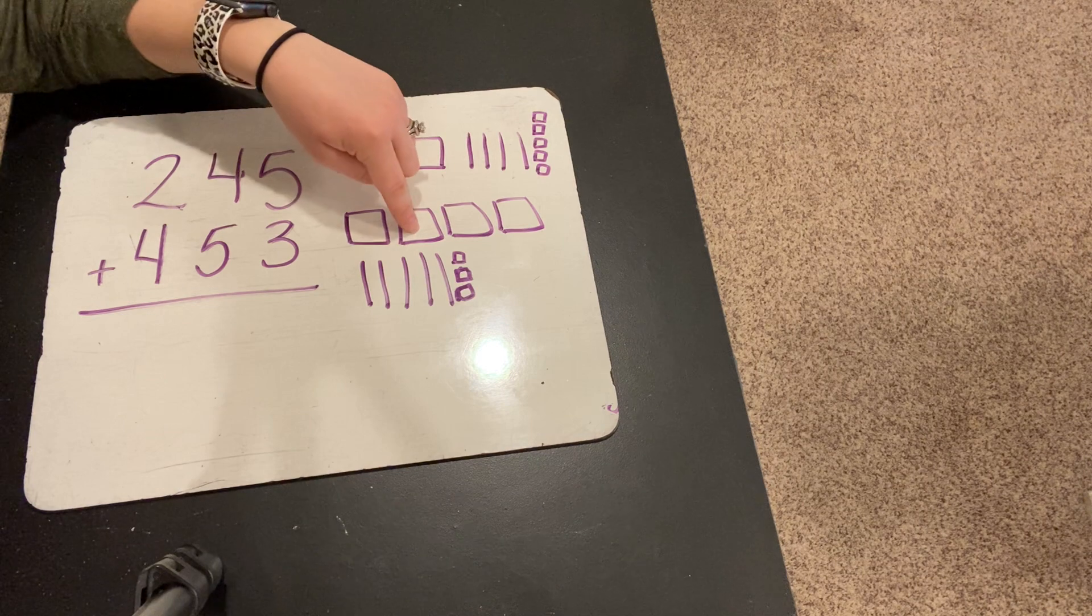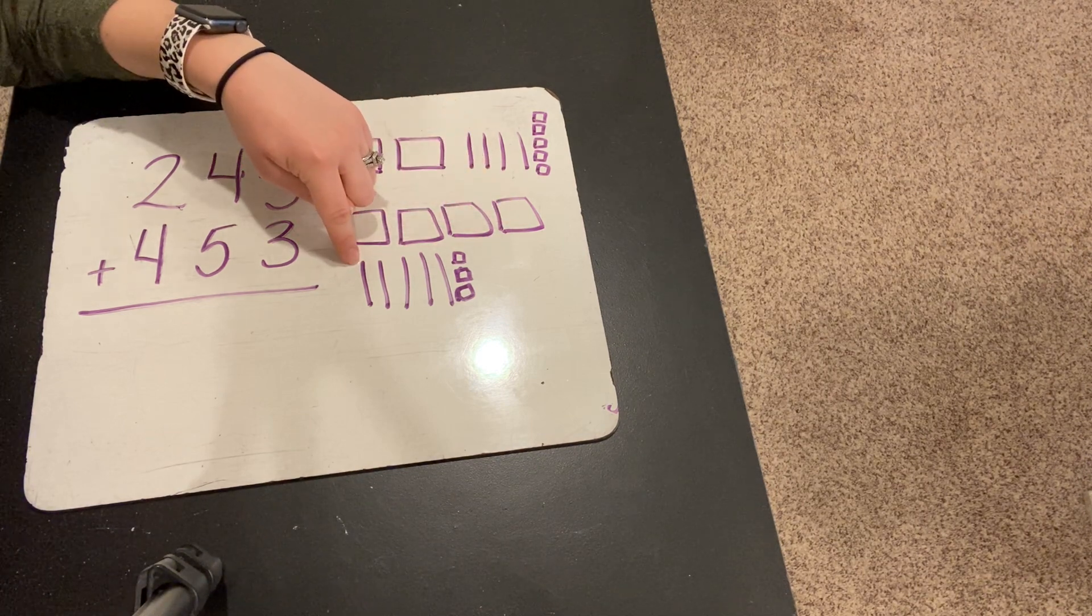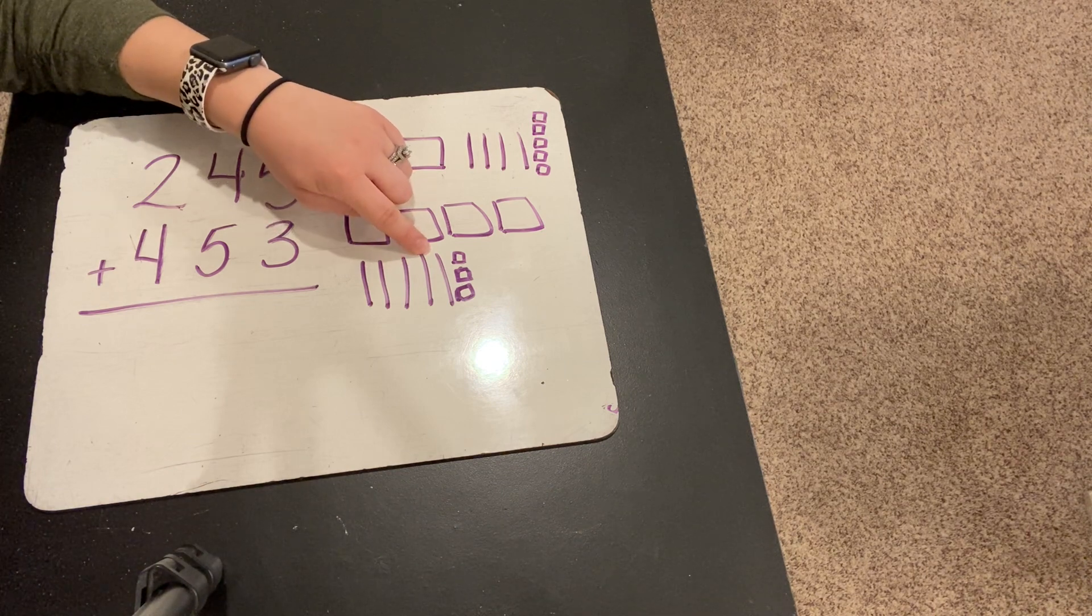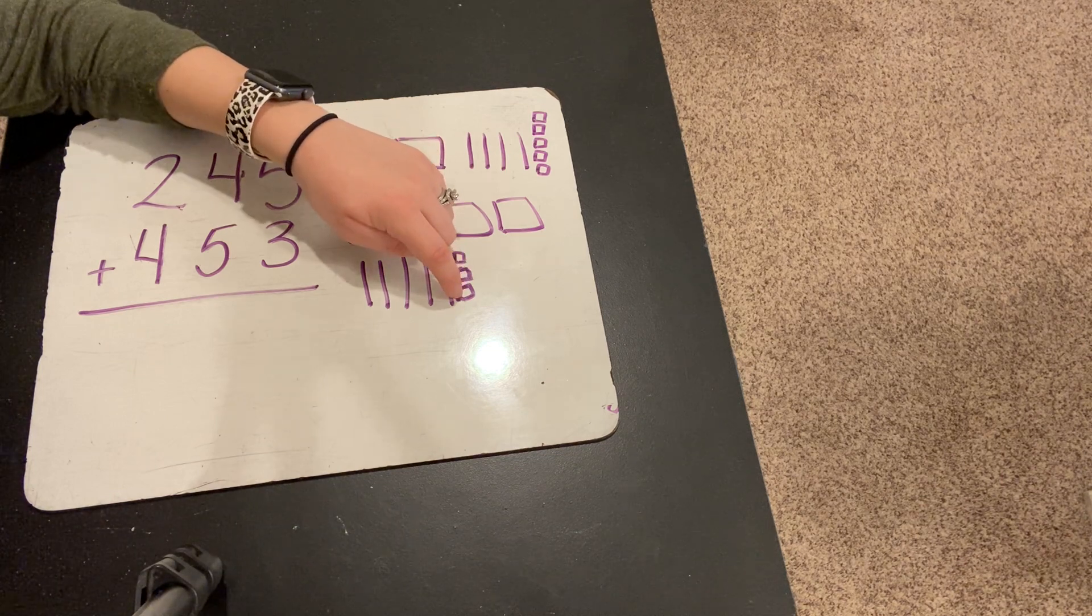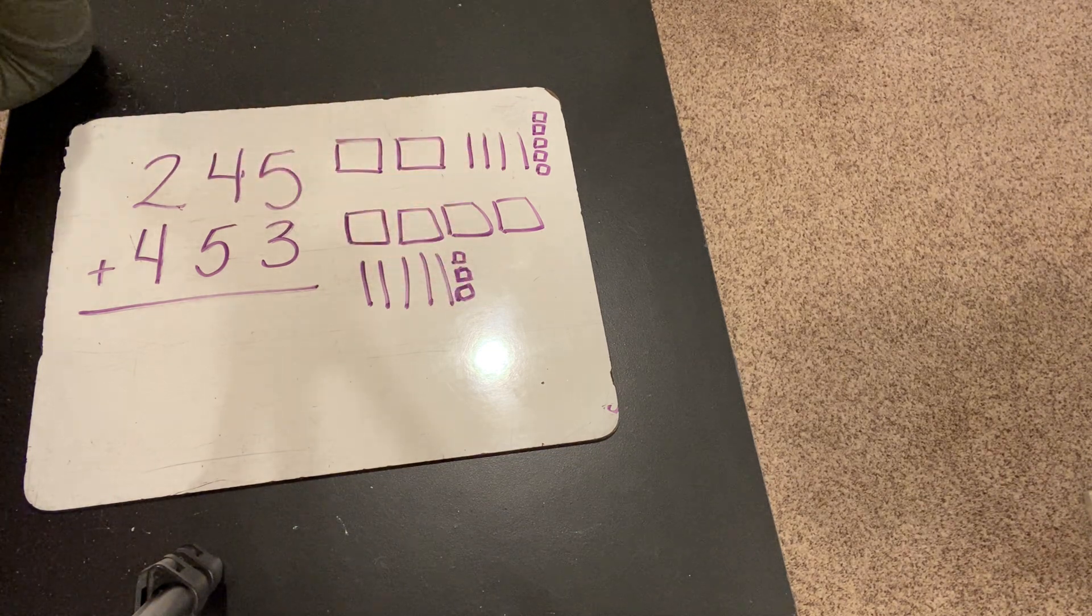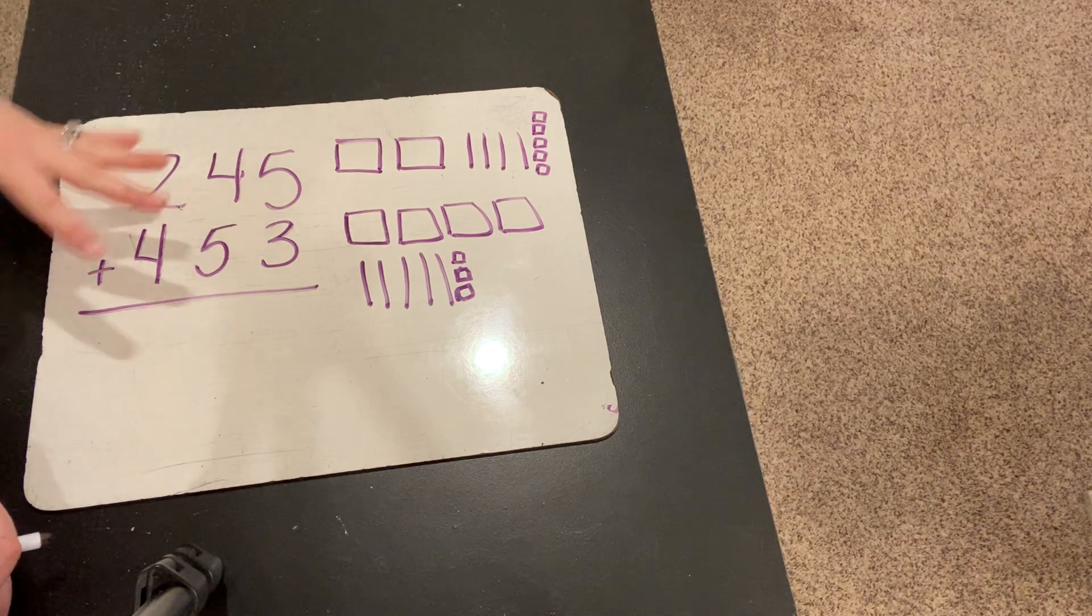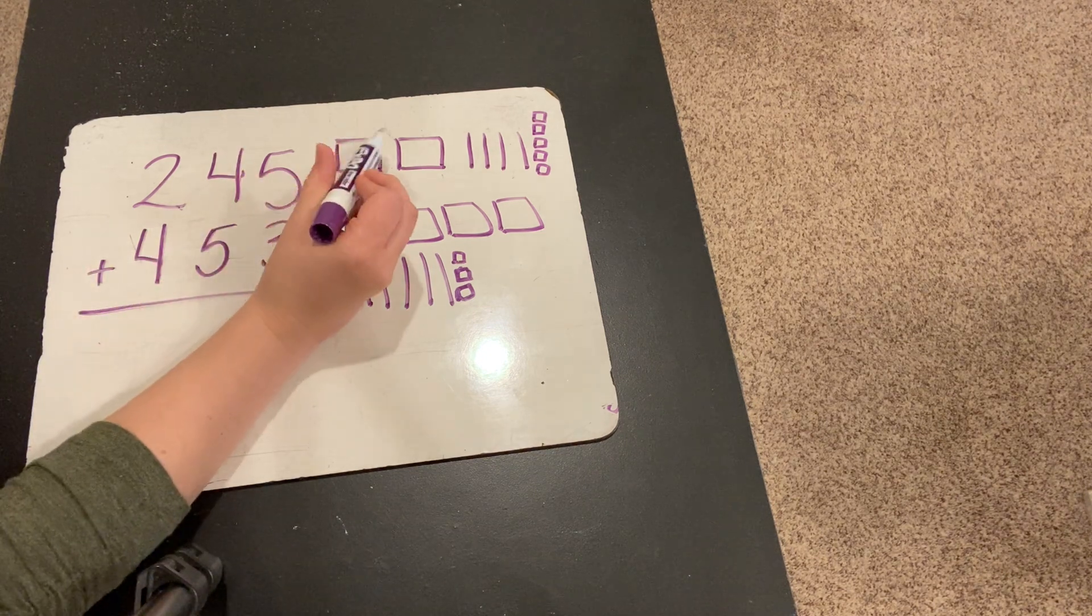Let's check 453. 100, 200, 300, 400, 410, 420, 430, 440, 450, 451, 452, 453. Okay, so they are both modeled correctly. Now, let's count and figure out how many there are total when we add them. Count with me.